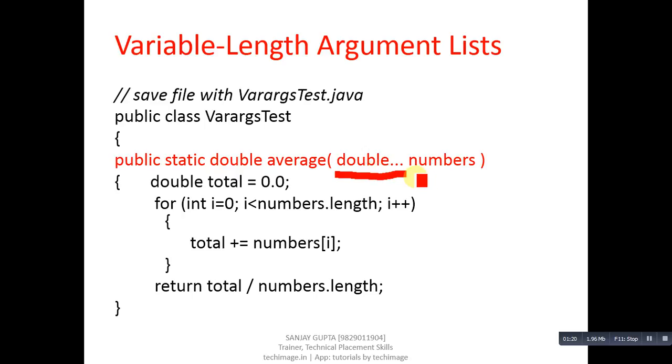This numbers will become a variable which can receive any number of arguments. So this number variable will convert into an array. You can see that in this for loop I have used numbers dot length.